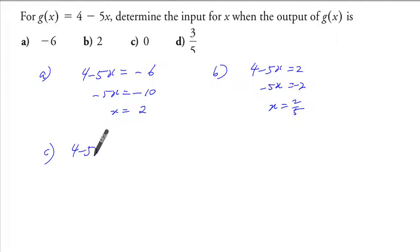For part c, 4 minus 5x is equal to 0. So x is equal to 4 over 5.